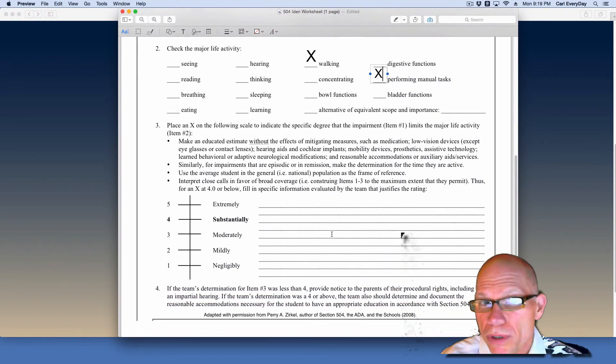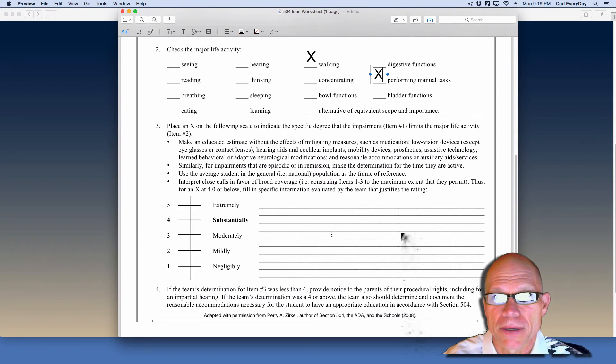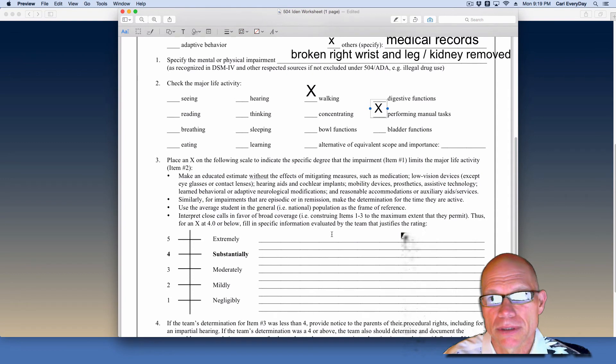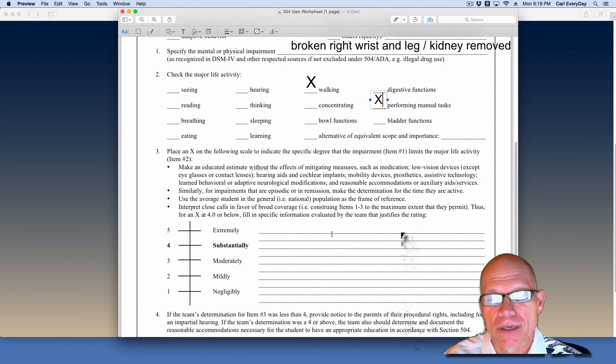Something that was new in the reauthorization in 2004 of ADA was this inclusion of substantial impairment. Or at least through some lawsuits, it is suggested that we be more specific about the degree to which the impairment affects the major life activity. And the law says it's supposed to be substantial.